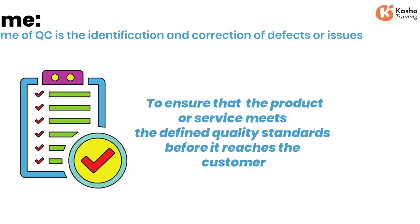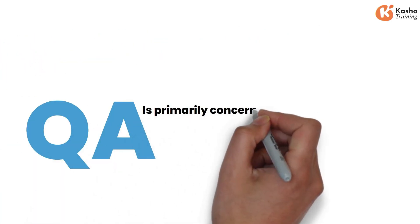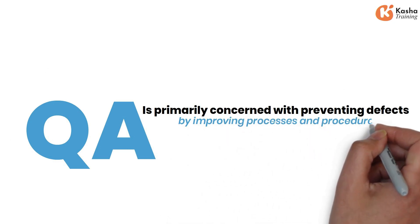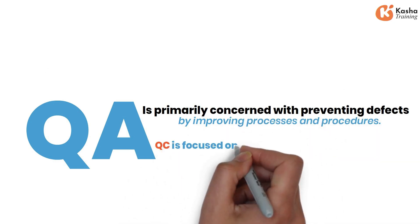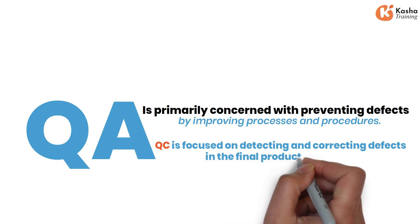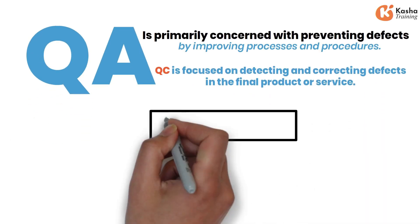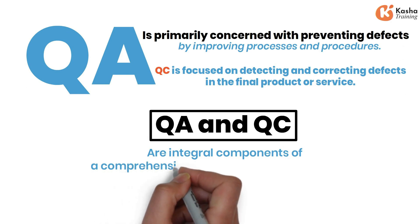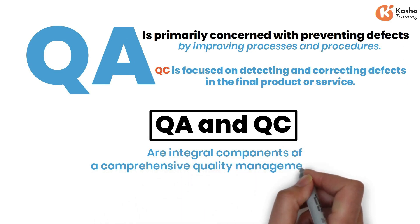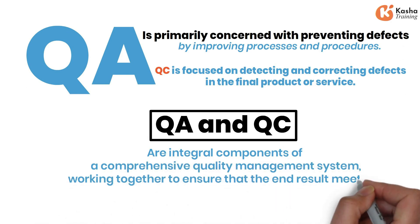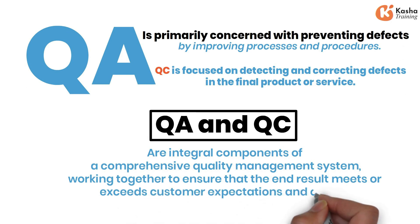In summary, while QA is primarily concerned with preventing defects by improving processes and procedures, QC is focused on detecting and correcting defects in the final product or service. Both QA and QC are integral components of a comprehensive quality management system, working together to ensure that the end result meets or exceeds customer expectations and quality standards.